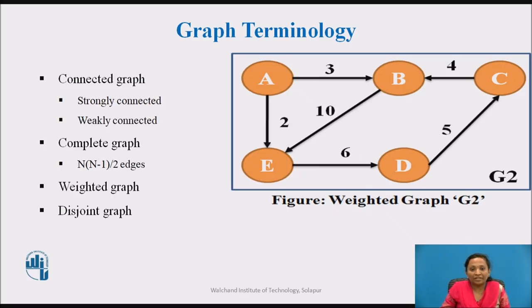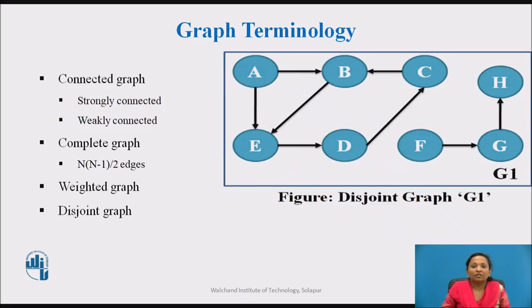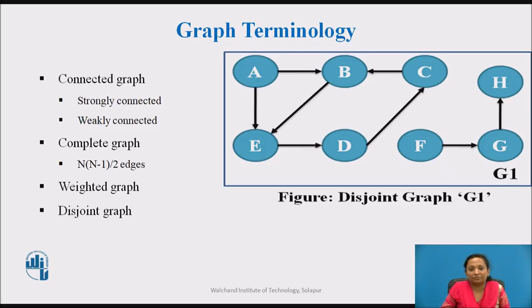Disjoint graph: A graph is a disjoint graph if it is not connected. For example, this graph is a disjoint graph where there is no edge between vertices a, b, c, d and vertices f, g, h. So this is an example of a disjoint graph.